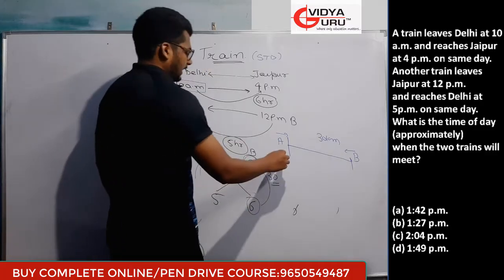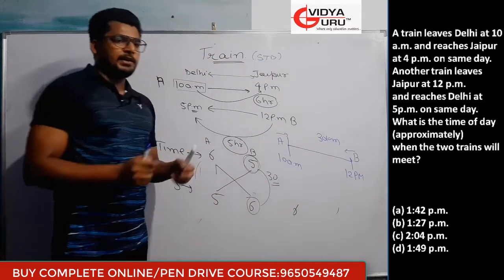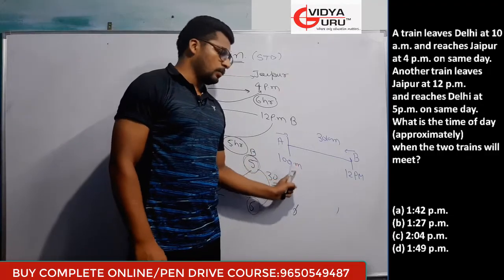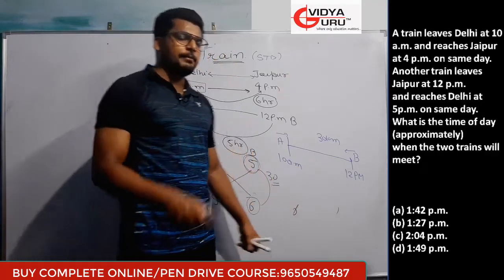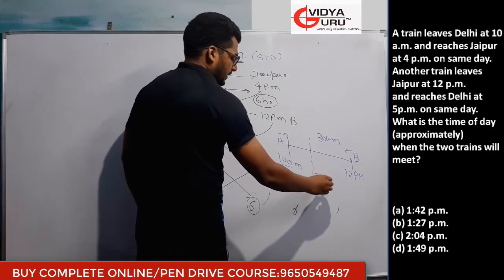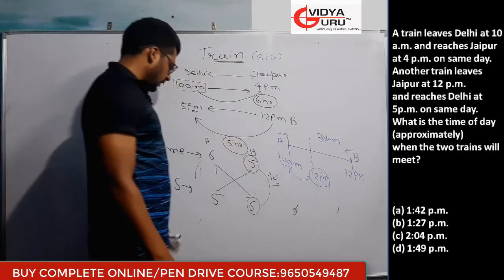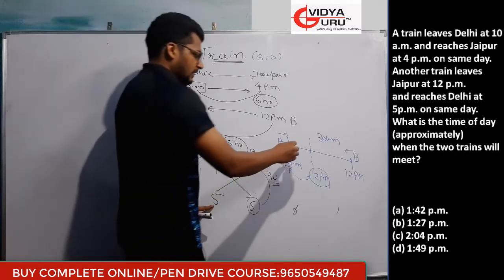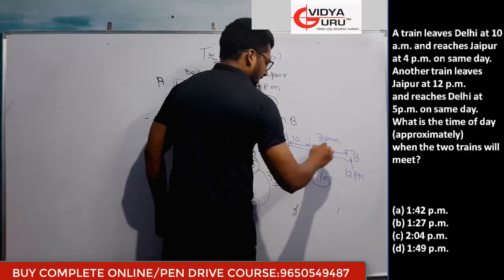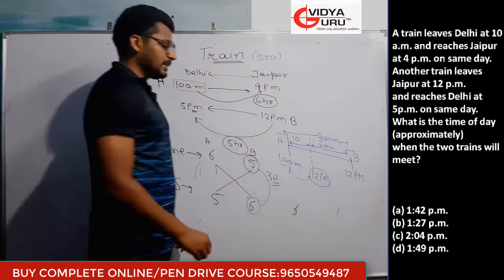To find the meeting time, both trains must be considered from the same start time. We bring train A forward to 12 PM. In the two hours from 10 AM to 12 PM, train A (speed 5) covers 10 units of distance. Remaining distance = 30 − 10 = 20 units.